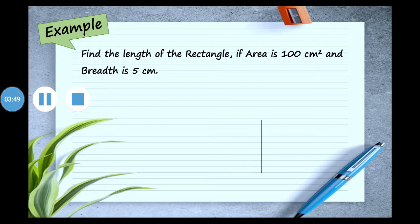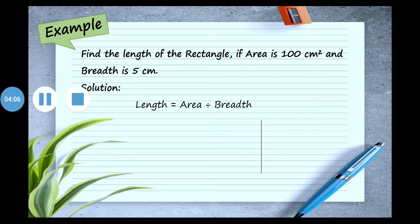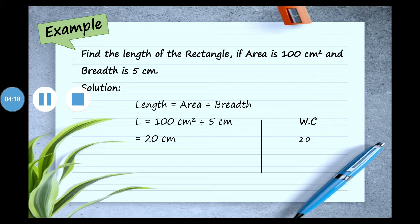The area is 100 square centimeters and breadth is 5 centimeters. We get the area by multiplying length and breadth, and here length is unknown. Using the formula — length = area ÷ breadth — area is 100 cm² and breadth is 5 cm, so we divide 100 by 5. In the working column: 5 × 2 = 10, bring down 0, so 100 ÷ 5 = 20.